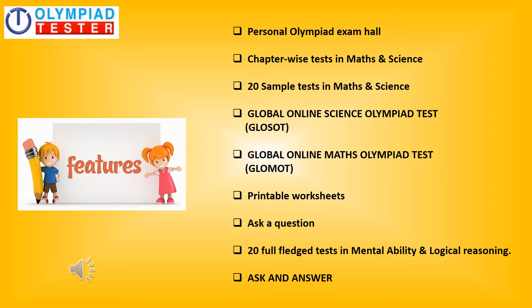The Gold Plan starts with the Personal Olympiad Exam Hall wherein all the online tests are assigned. It includes chapter-wise tests in Maths and Science, 20 sample tests which are full-fledged mock tests in Maths and Science, and the Global Online Science Olympiad test — a monthly online test conducted globally across 7 countries, popularly known as GlowSort.